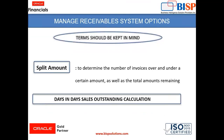There are some terms we should keep in mind before going to the Receivable System Options Configuration. First is Split Amount. It determines the number of invoices over and under a certain amount given as a split amount, as well as the total amount remaining. For example, if a company generates invoices that are either of amount 300 or 500, you can choose an amount of 400 as your split amount.